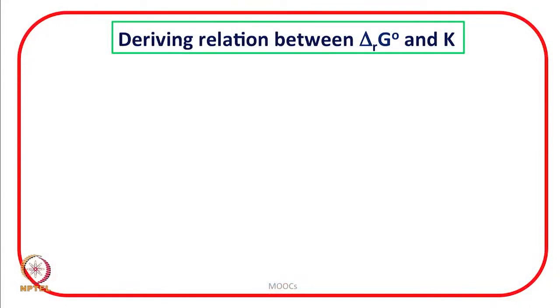In one of the previous lectures, we derived a relationship between standard reaction Gibbs energy and equilibrium constant, but that was based upon perfect gas equilibrium. Today, we will derive a relationship between standard reaction Gibbs energy and equilibrium constant for all general reactions in which the reactants and products need not be perfect gases or need not be ideal solutions. So, let us proceed towards the method to derive this relationship.